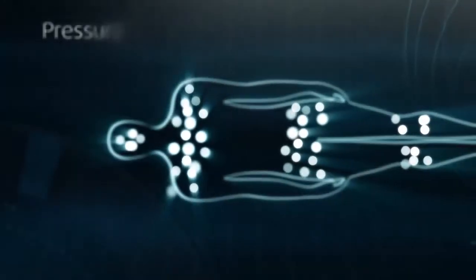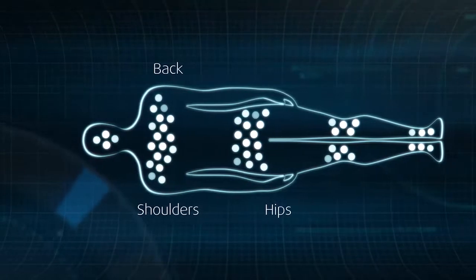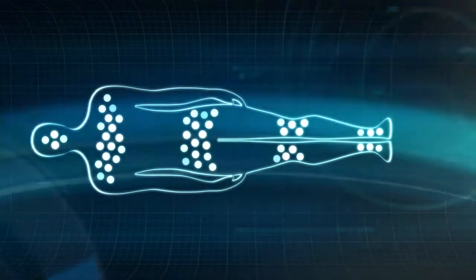A mattress can cause uncomfortable pressure points on your body, with the back, shoulders and hips being the most commonly affected. This pressure can disturb your sleep and cause you to toss and turn.